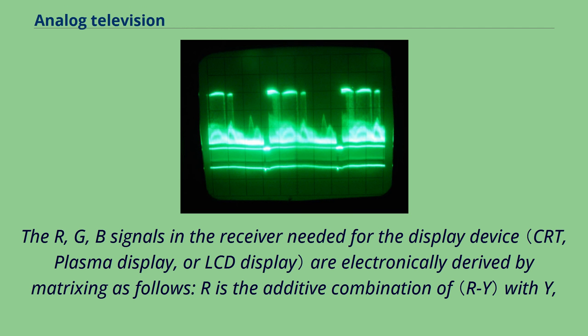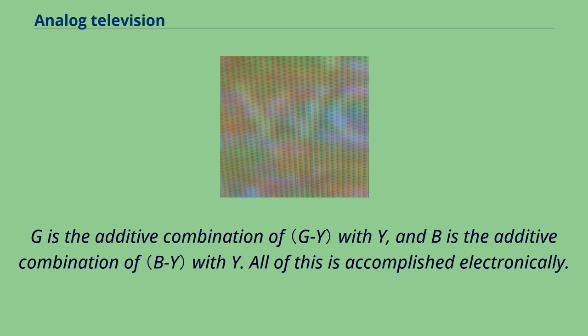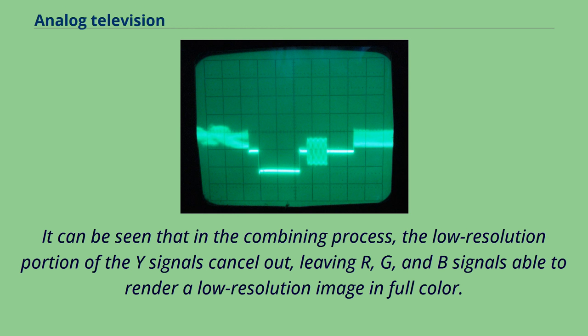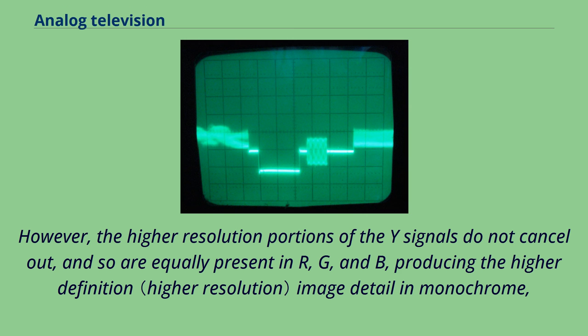It can be seen that in the combining process, the low resolution portion of the Y signals cancel out, leaving R, G, and B signals able to render low resolution image in full color. However, the higher resolution portions of the Y signals do not cancel out, and so are equally present in R, G, and B, producing the higher definition image detail in monochrome. Although it appears to the human eye as a full color and full resolution picture.